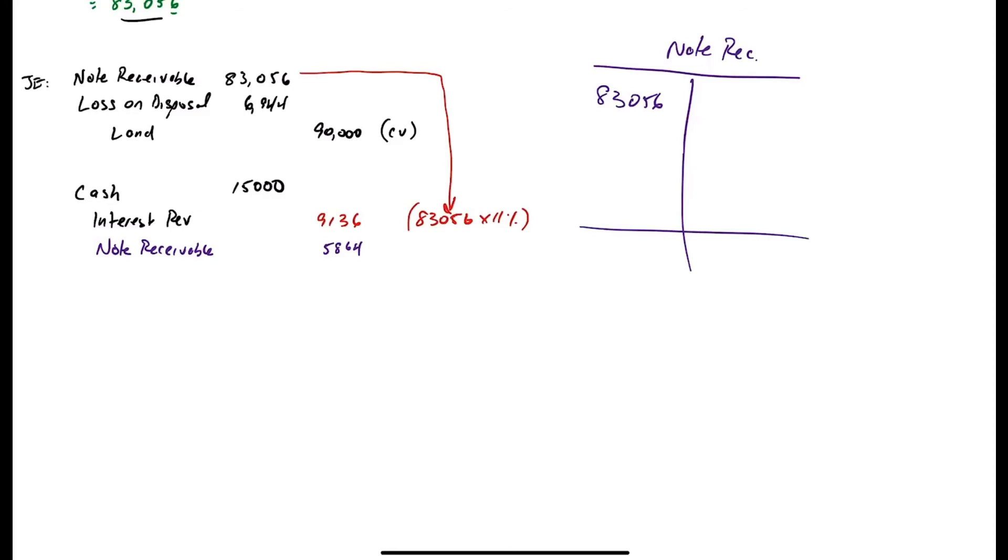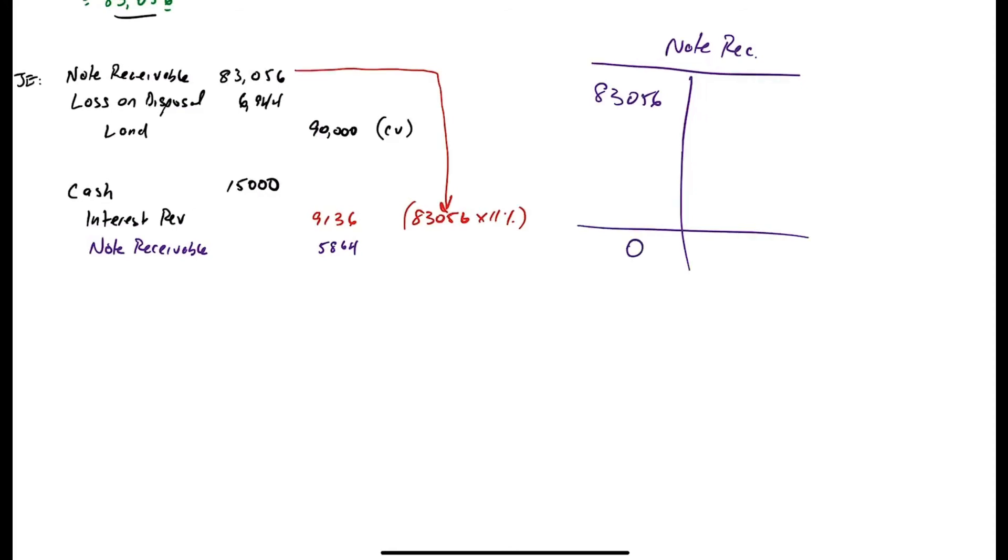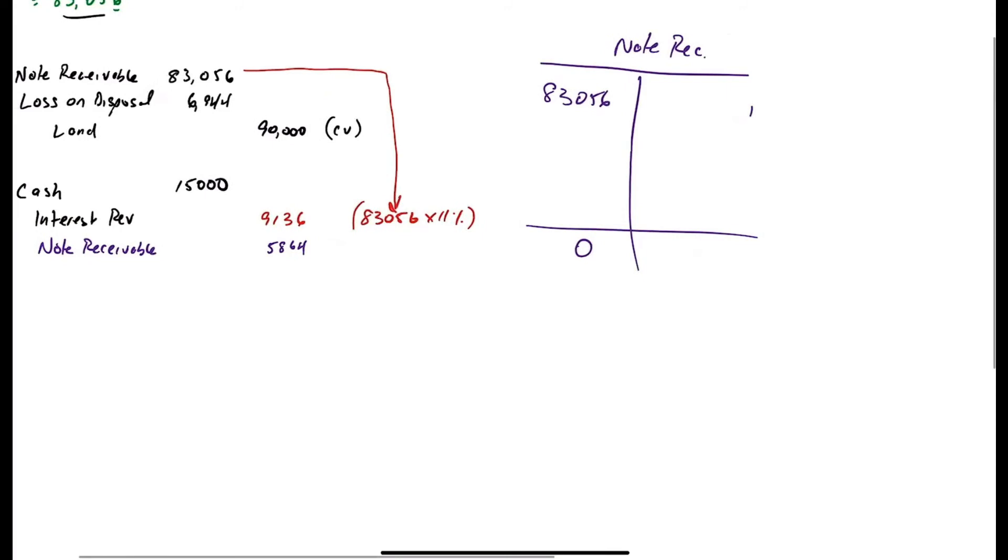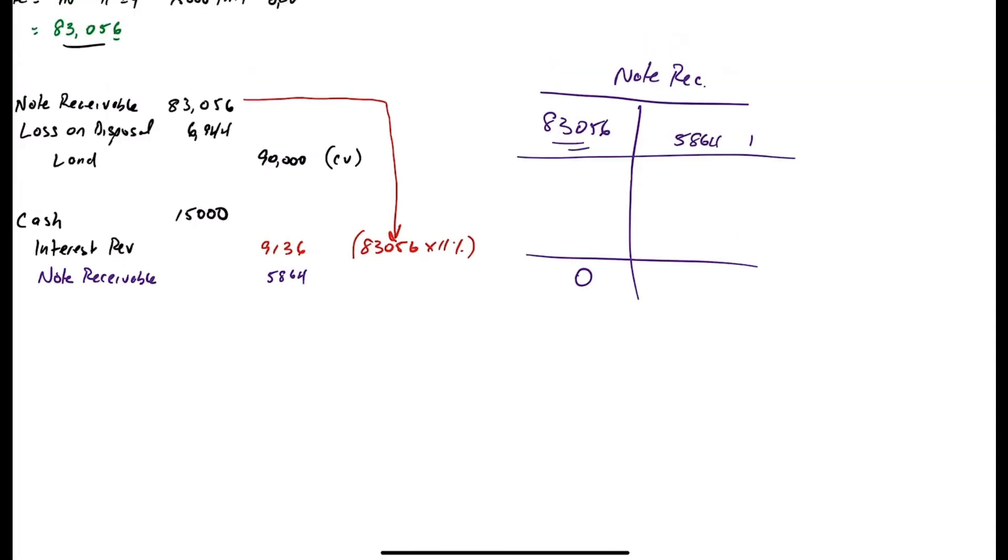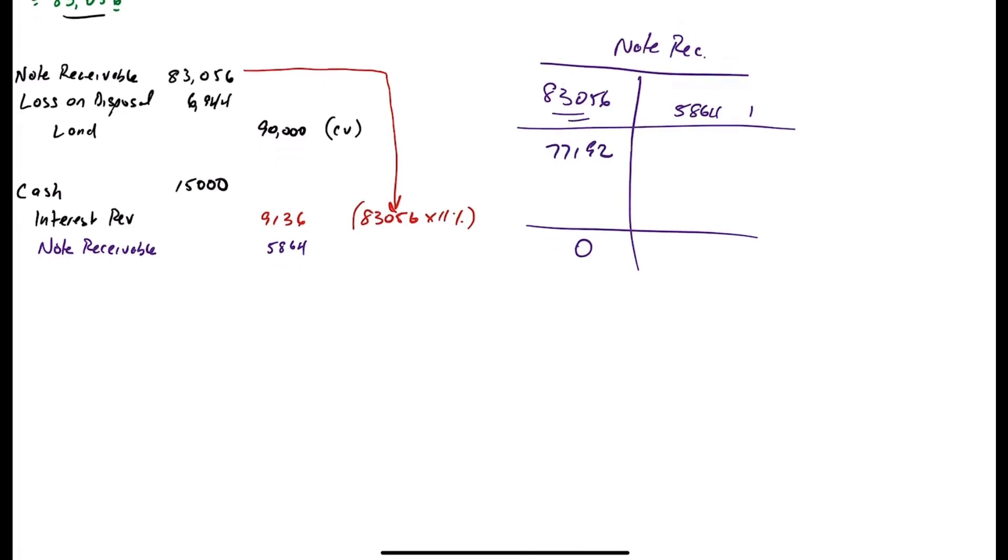So after 15 years, once the note is paid, this should be zero. There wouldn't be anything left on the note because it's paid. And every year, you're going to have amortization of this principal amount. So this is $5,864 after the first year, which leaves a balance of $77,192. That's what would be left on the loan after the first year.